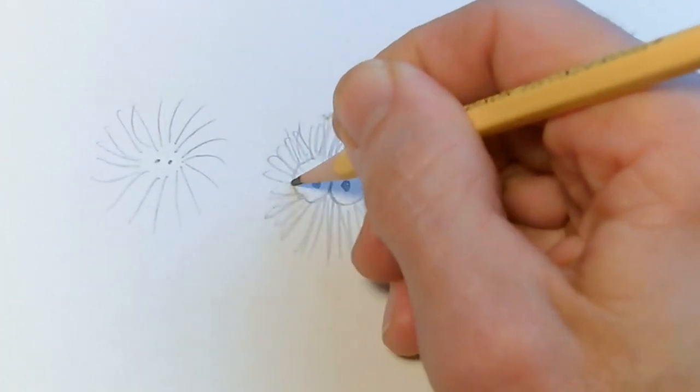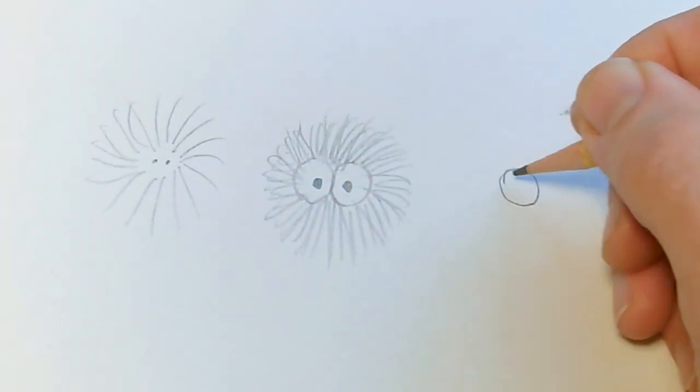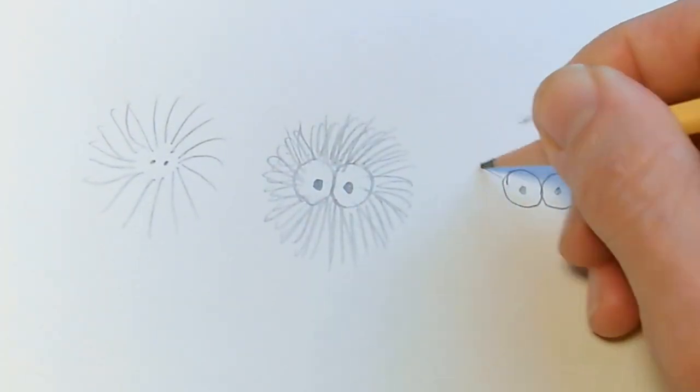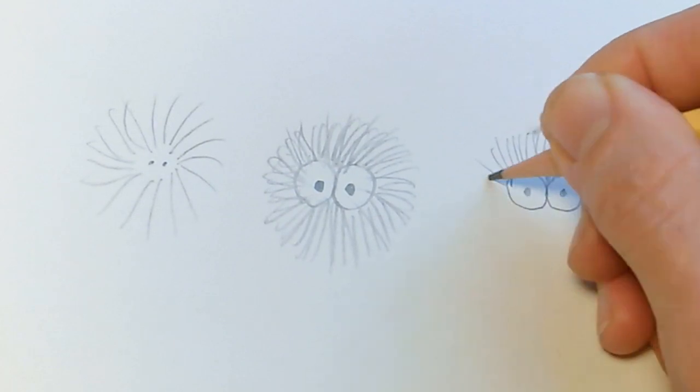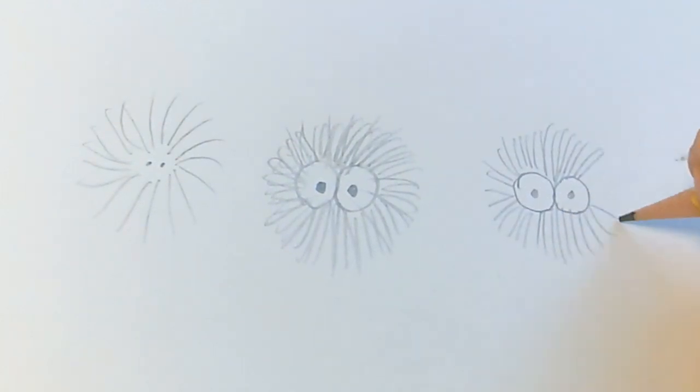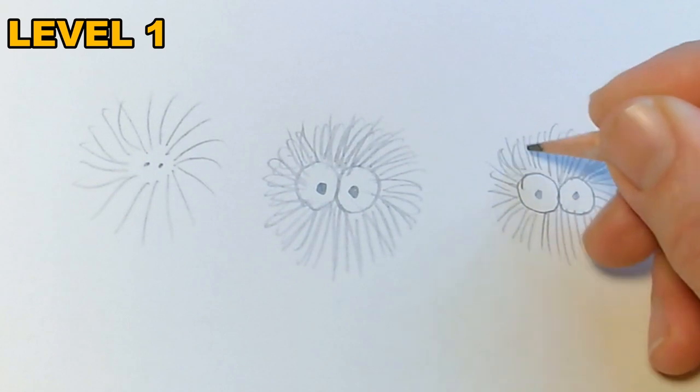With a little practice, we can actually draw the eyes first and then bring the fur out in all directions around them. And this is a level one monster: just two staring eyes surrounded by all that fur. Kind of cute.